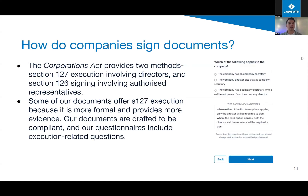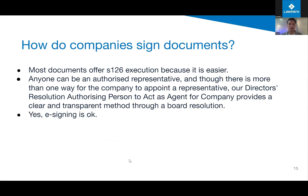How do companies sign documents? The Corporations Act provides two methods: section 127 execution and section 126 execution. Some of our documents offer section 127 because it's more formal and provides more evidence. The documents are drafted to be compliant with the methods set out in the Corporations Act. Section 127 is rarely compulsory under legislation, but having more people - and people in charge of the organization - sign gives a greater sense of security that both parties actually intend to bind the companies to the obligations.